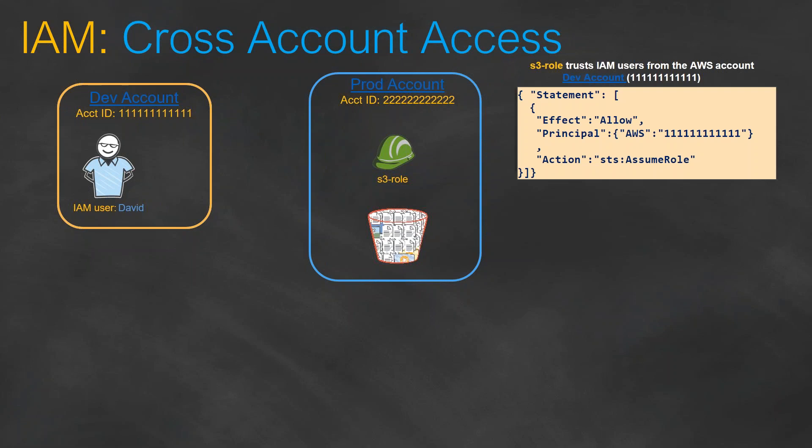We are going to attach an assume permission here so that David from account number 111 will be able to assume this role. That is the trust relationship that you are setting up for this role.